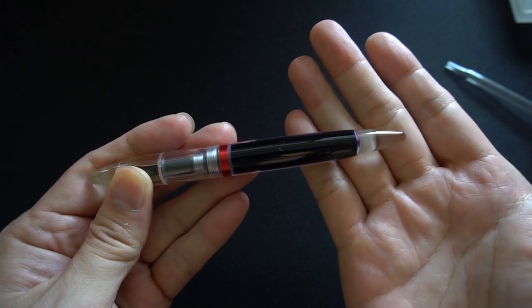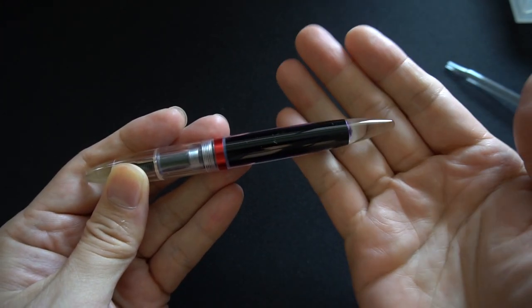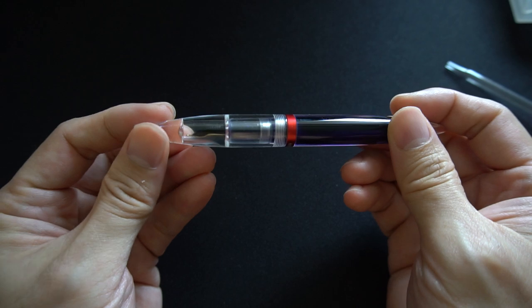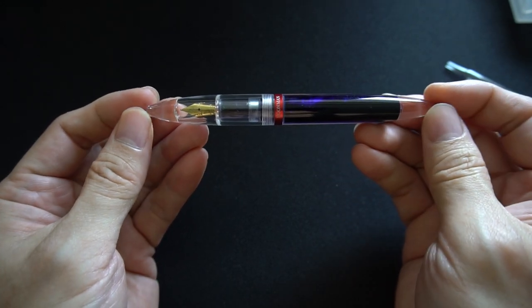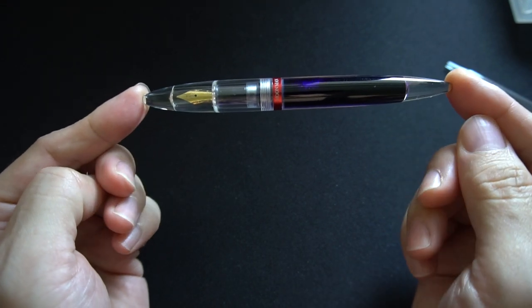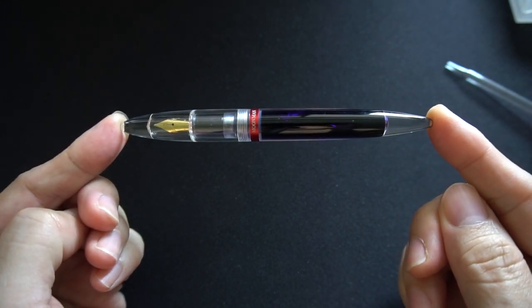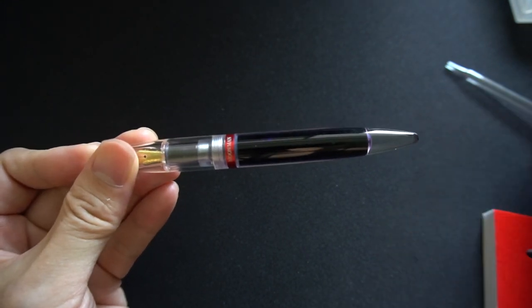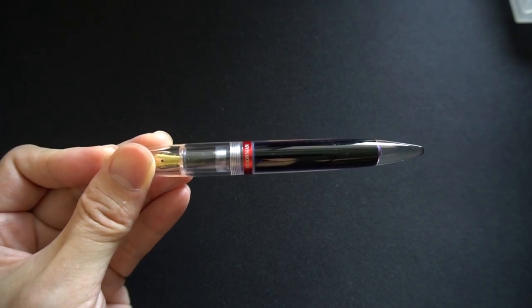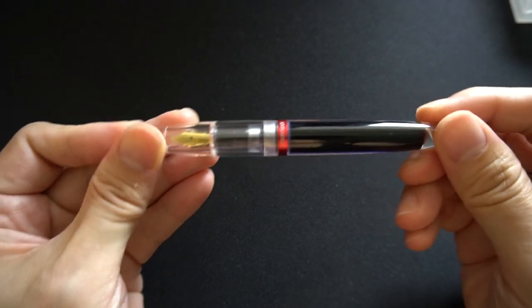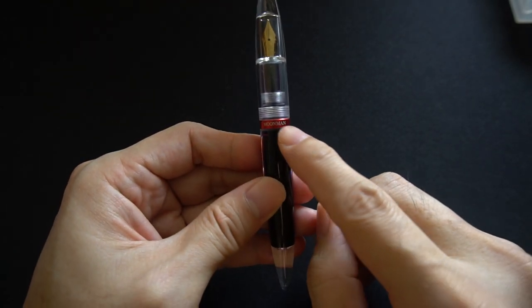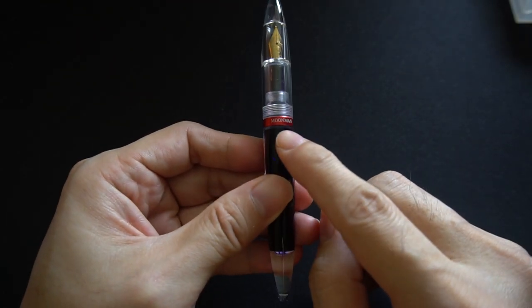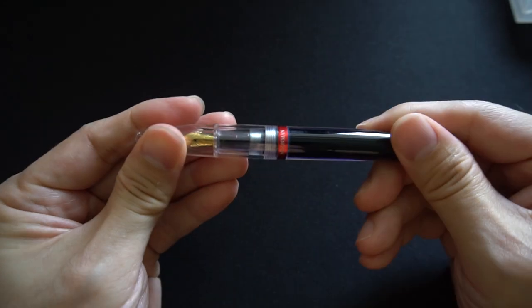Just to describe what the pen looks like - obviously there's not much, it's just a pretty clear pen. I'll just take all of this out of the way. It has a band down here in red that says Moonman.